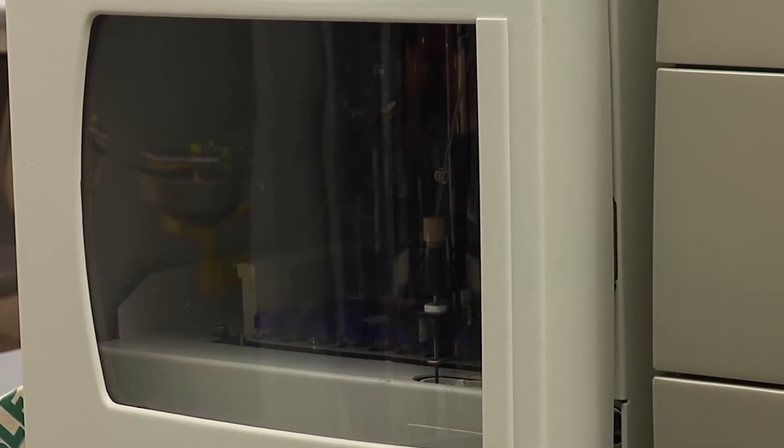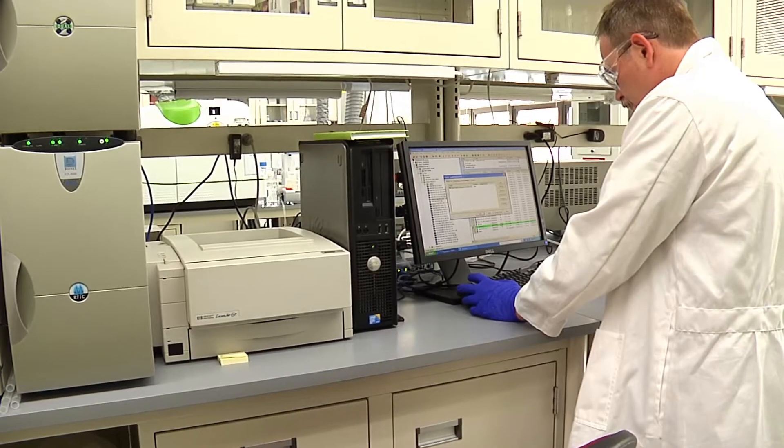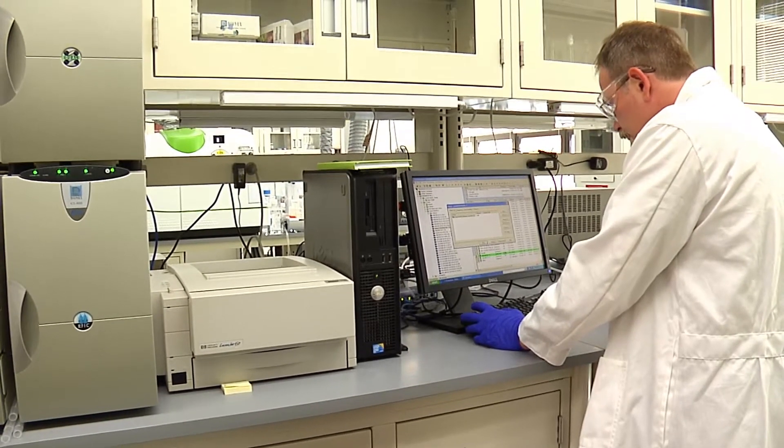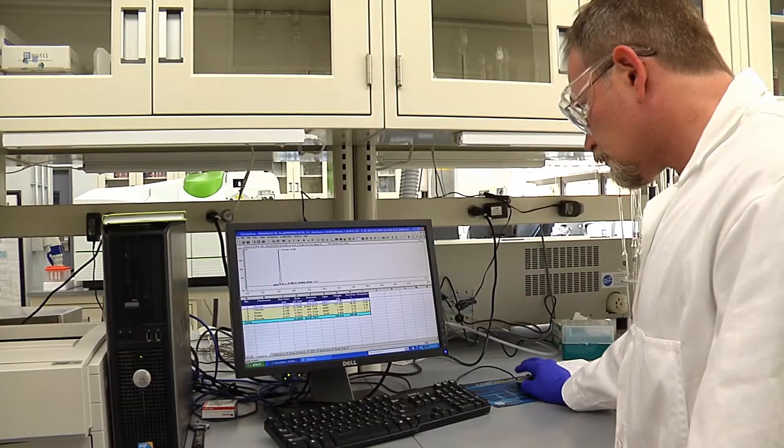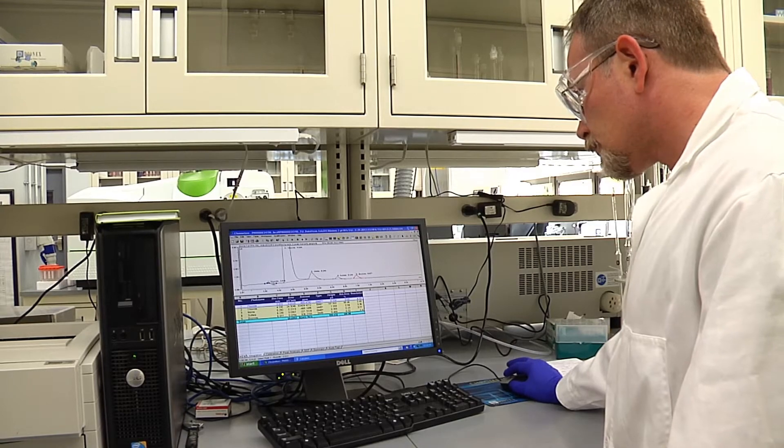Another method of analysis is ion chromatography, which is a process that allows the separation of ions and polar molecules based on their charge. It is often used in protein purification, water analysis, and quality control.